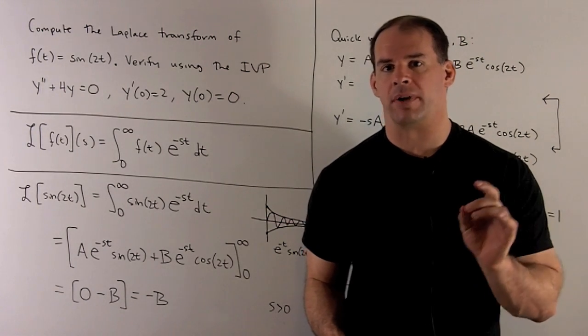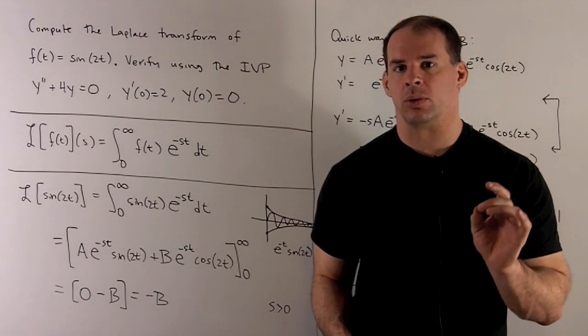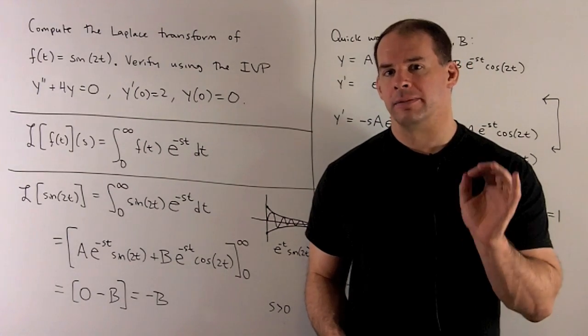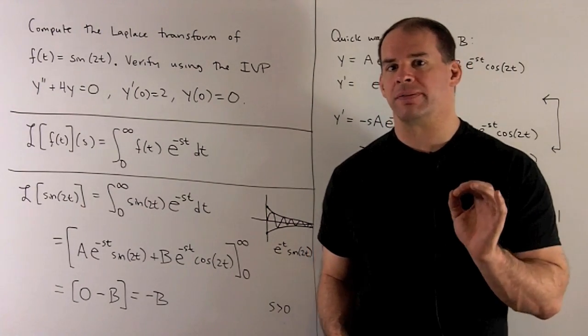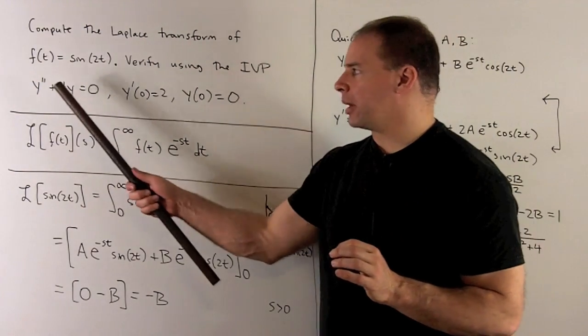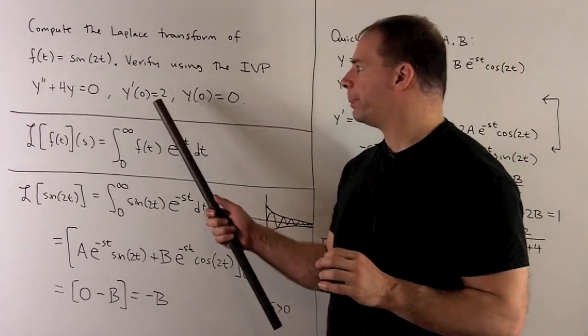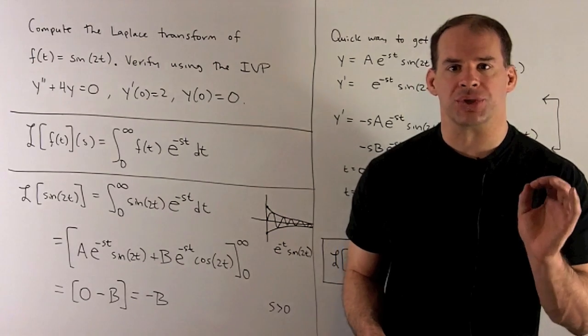Compute the Laplace transform of the function f(t) equals sine of 2t. Then, verify your answer by using the initial value problem: y double prime plus 4y equals 0, y prime of 0 equals 2, y of 0 equals 0.